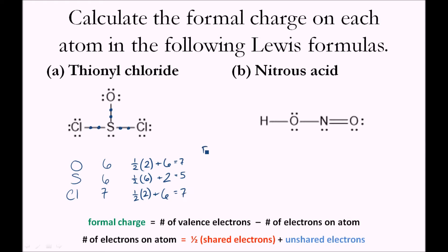The formal charge for each atom is the first column minus the second column. For oxygen, it's six minus seven, which is negative one. For sulfur, six minus five is positive one. And for chlorine, it's zero. So we'll add these formal charges to the Lewis formula, putting a minus sign near the oxygen and a plus sign near the sulfur to indicate their formal charges.